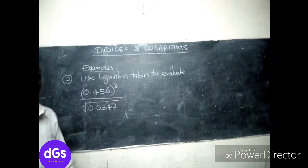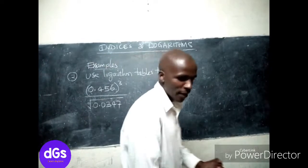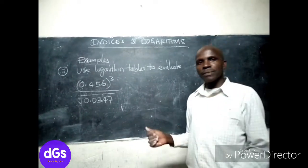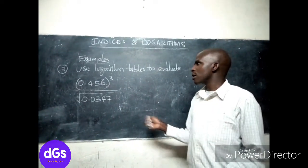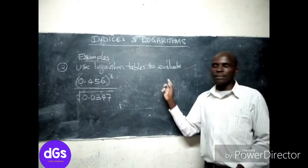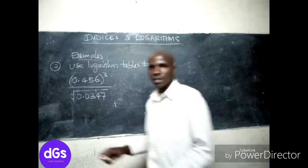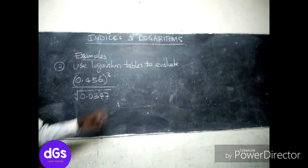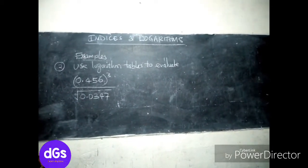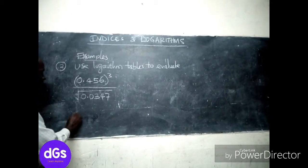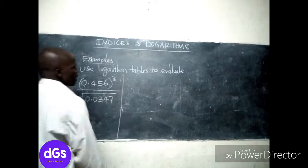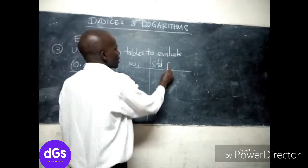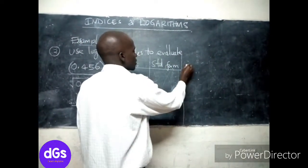Welcome. We have another example on logarithms and indices. This is a good reminder of how you approach problems on logarithms. However you solve logarithmic problems using logarithmic terms, let's go through this one. In our example we have 0.456 cubed divided by the square root of 0.0347. The first column is your number, the second is standard form, and the third is the logarithm.